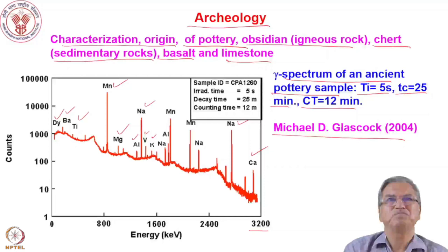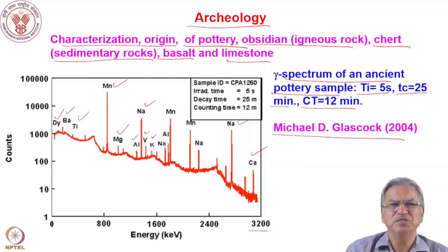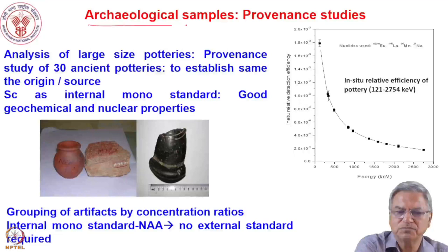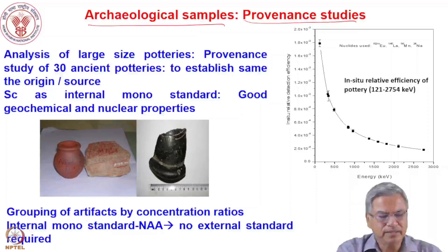Archaeological samples of varied type and varied sources can be analyzed to find out the source of a particular artifact. You can understand the evolution of civilizations by neutron activation analysis. Another class of application is provenance study of archaeological samples.